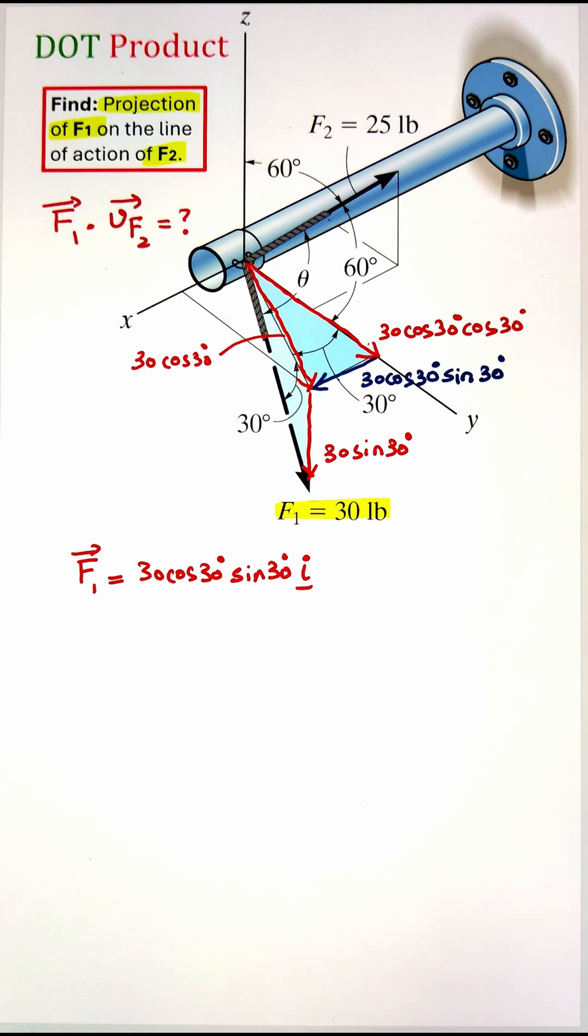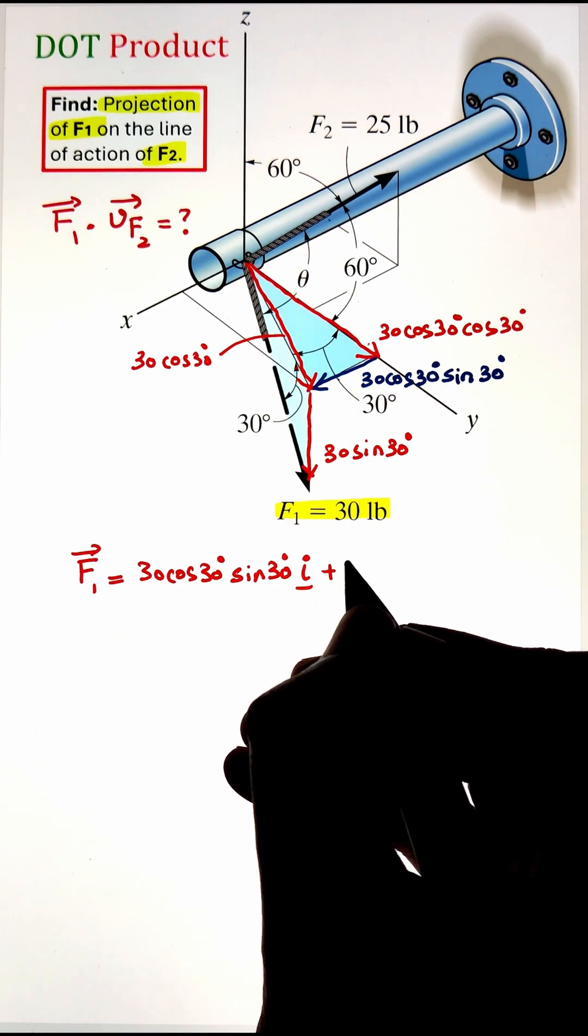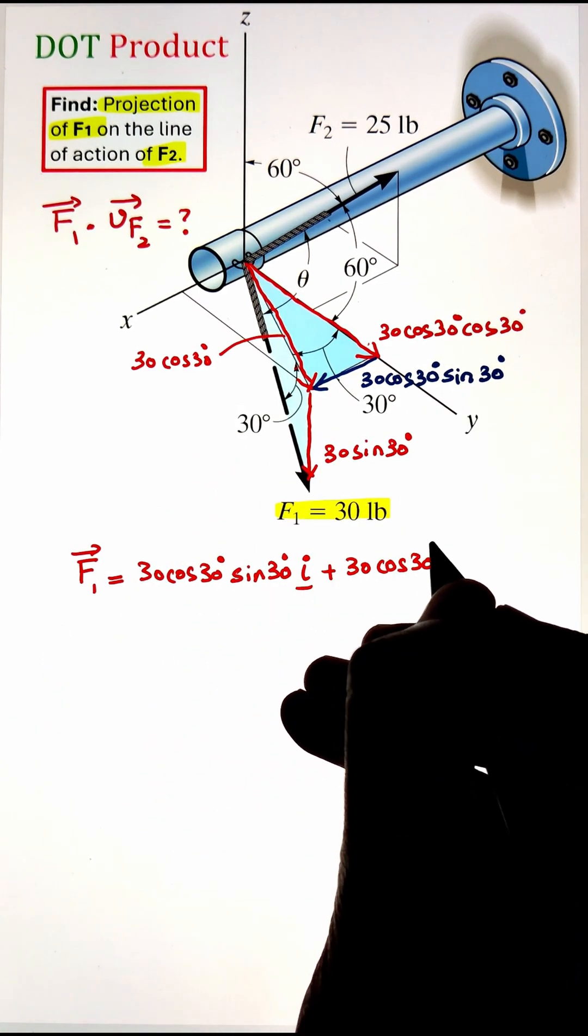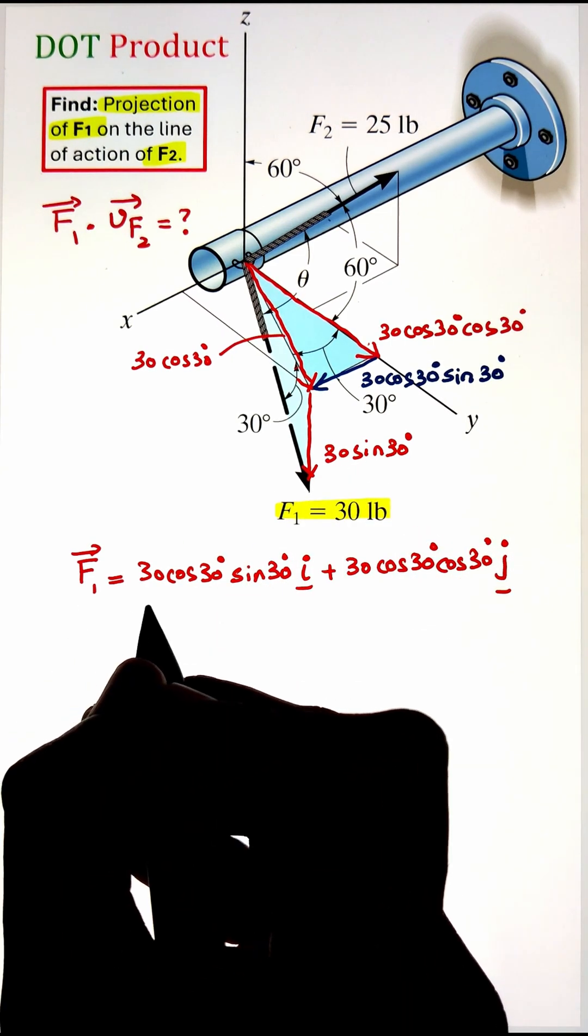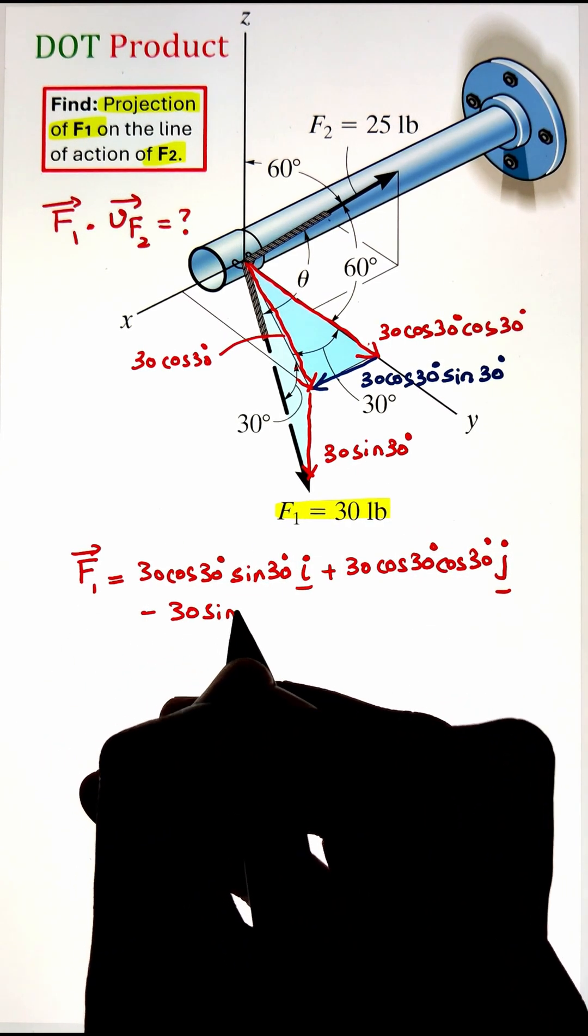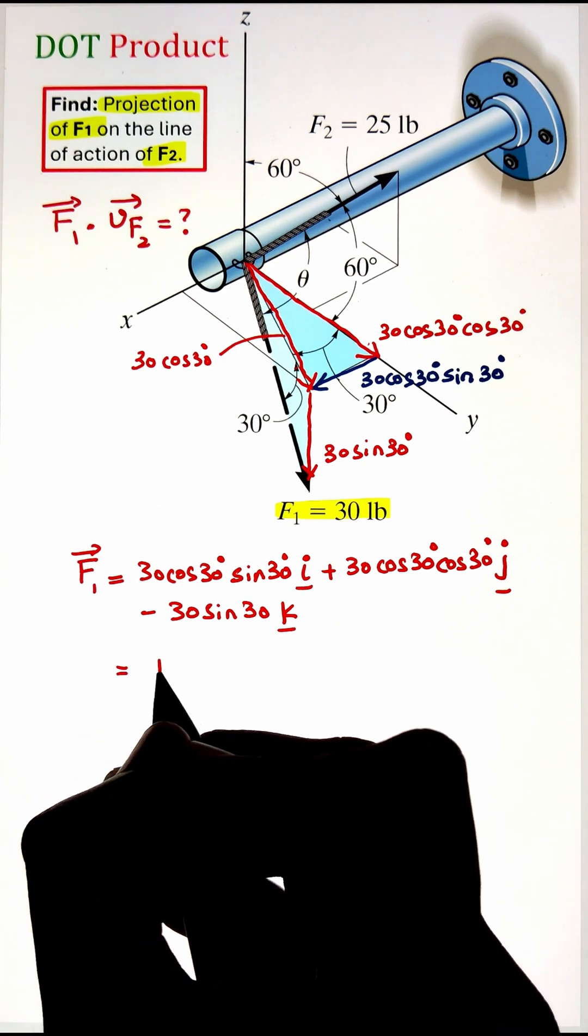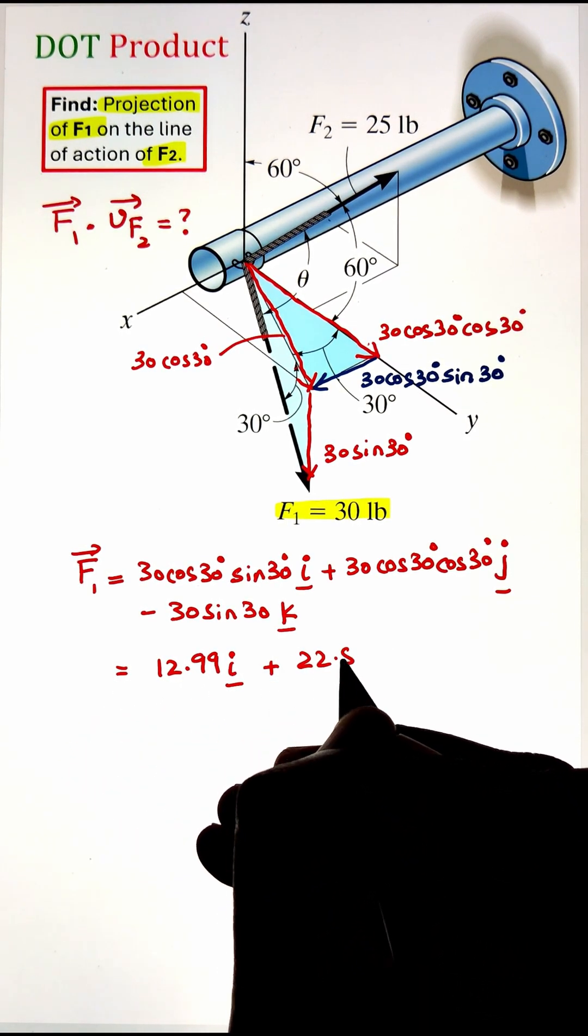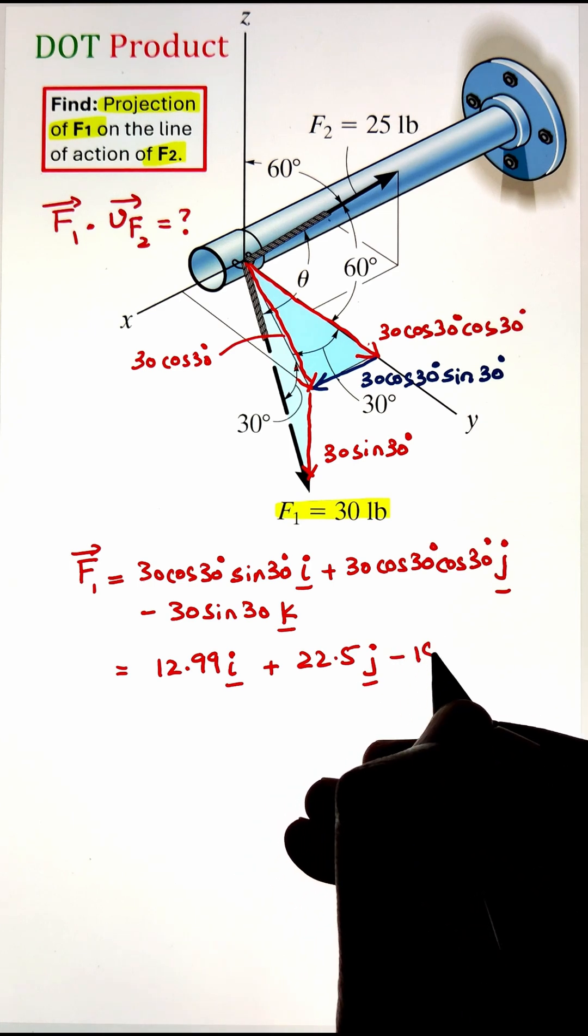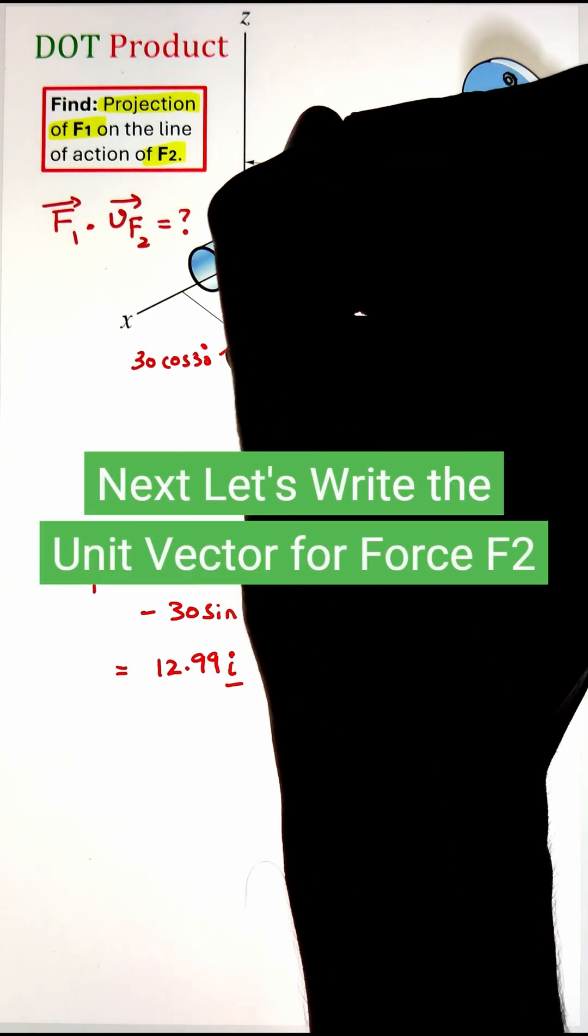Once we have each one of these components, we can represent it in terms of i, j, and k component. Here the i, j, and k are representing the unit vector along the x, y, and z axis respectively. Simplifying, we are getting the value of 12.99i plus 22.5j minus 15k.